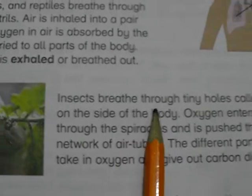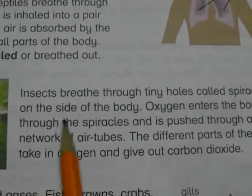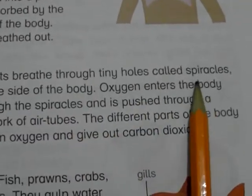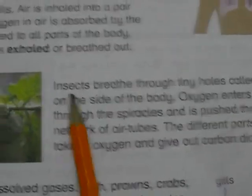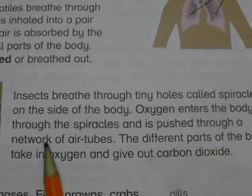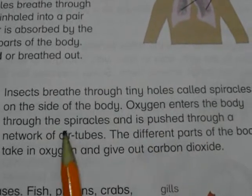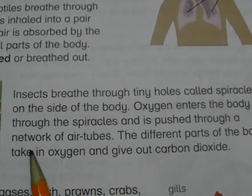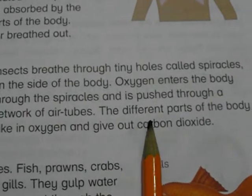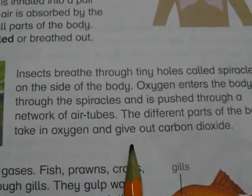Insects breathe through tiny holes called spiracles on the sides of their body. Oxygen enters the body through the spiracles and is pushed through a network of air tubes. Different parts of the body take in oxygen and give out carbon dioxide.